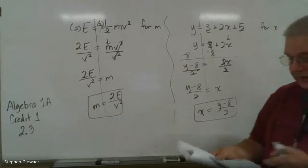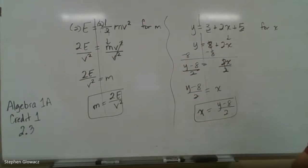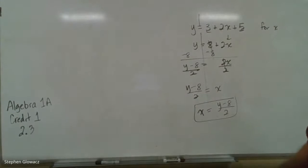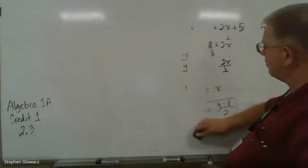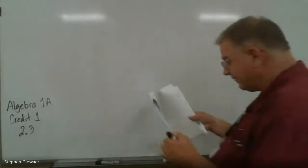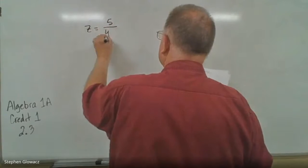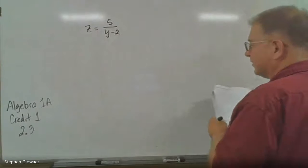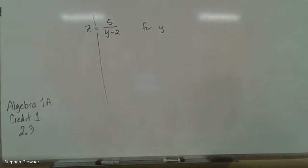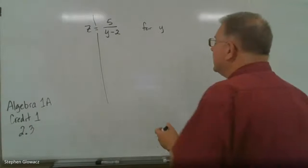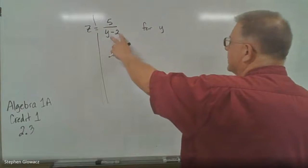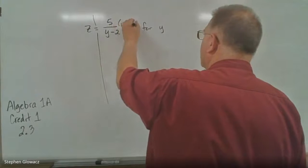Turning the page to page 45 for our last two problems. Number 9: Z equals 5 over Y minus 2. We're solving for Y. Whenever we have a fraction, we want to get rid of that fraction first. What's different here is we've got a little more than a single variable in the denominator — we've got Y minus 2. So 5 is being divided by Y minus 2, and we multiply by Y minus 2 on both sides.